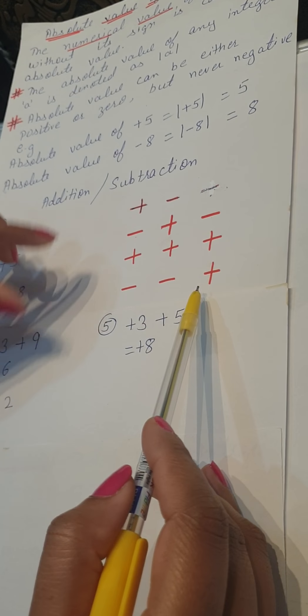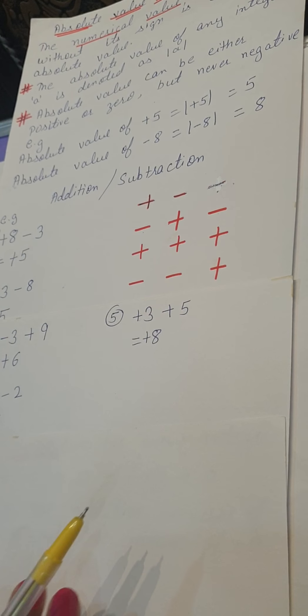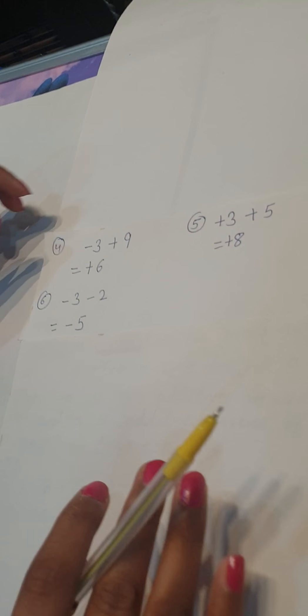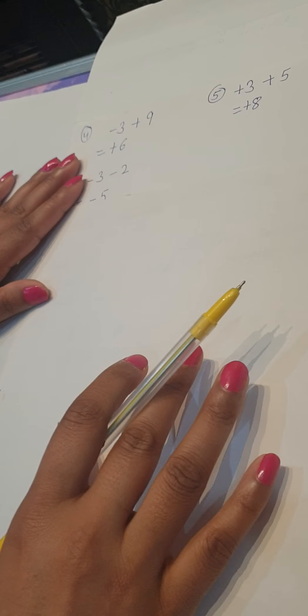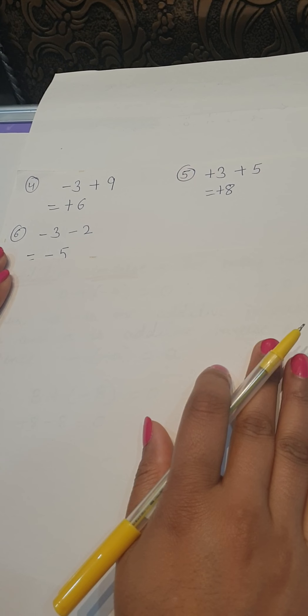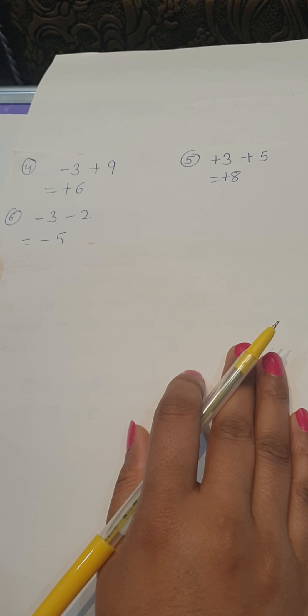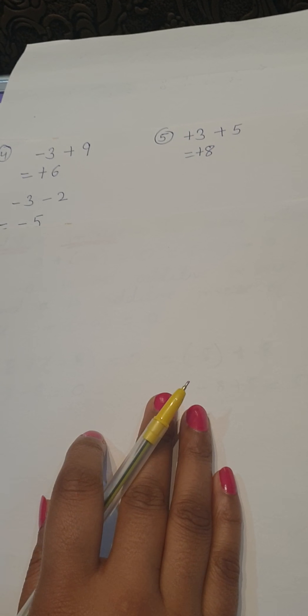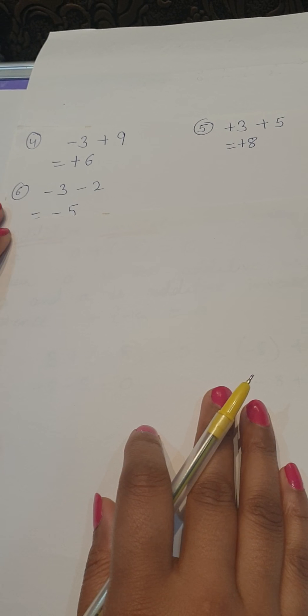So these are the four rules — remember these four points, as they will be used when we solve questions. Now one more property of integers: additive inverse. Later we will do all properties, but right now we will do additive inverse because it will be used in our questions.